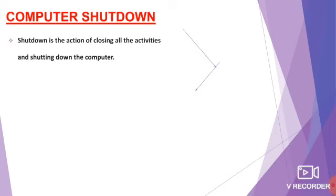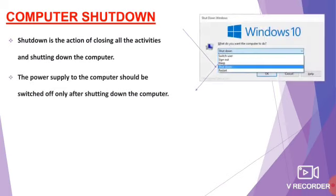This is the shutdown option. You can see many options here — sign out, shutdown, sleep, everything. After finishing your work, you have to close the computer, and for that purpose we use the shutdown option. If you are going to use the computer again within half an hour or 15 minutes, there is another option called suspend or sleep. It will keep you on the page where you finished last. When you switch on the power supply again, it will show you the same page which you left. That is why we use suspend or sleep — it is a nice option if you are going to use the computer within 50 minutes or half an hour.